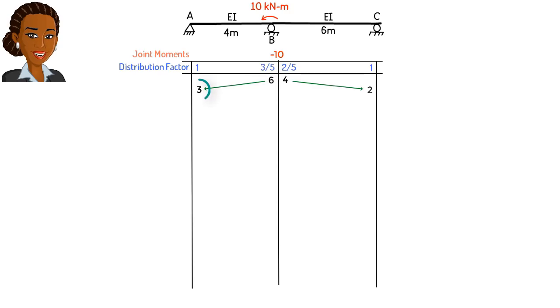The total bending moment at A is 3 kNm. To balance the joint, we add negative 3 to the left column. The total bending moment at C is 2 kNm. We add negative 2 to the right column to balance the joint. We then carry over half of each recently added moment value to the other side of the member. This means we write negative 1.5 in the second column and negative 1 in the third column.